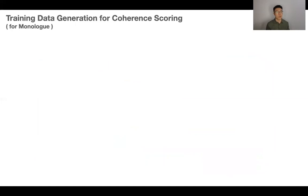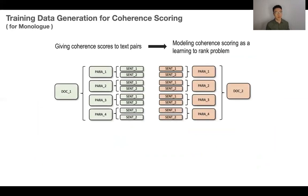Directly asking for human annotation by giving utterance pairs the coherent score is tedious and time-consuming. Therefore, we borrow a popular idea of generating training data for model log text coherence prediction by modeling it as a learning-to-rank problem. As shown here, usually a model log document should contain structure, like sentences to form a paragraph and paragraphs to form a document.